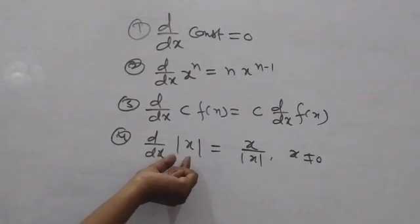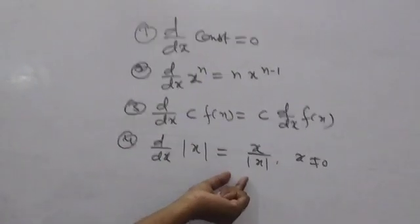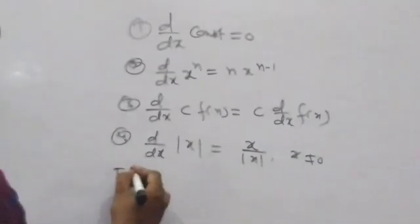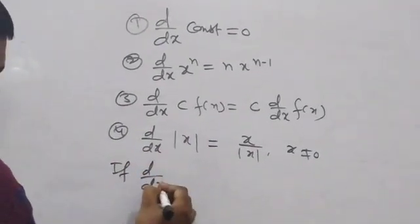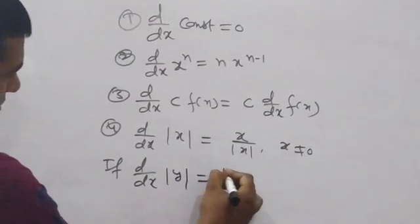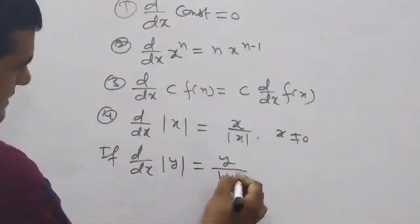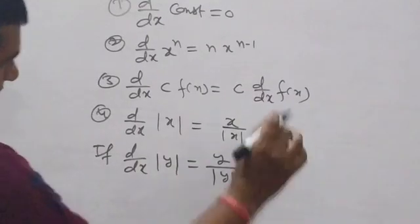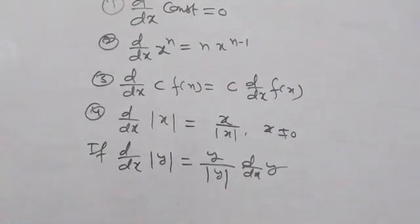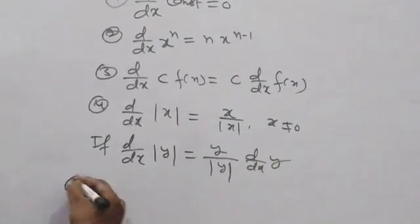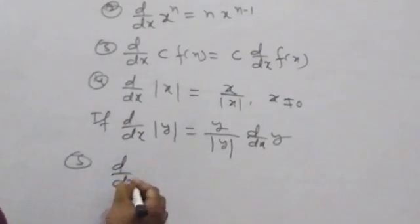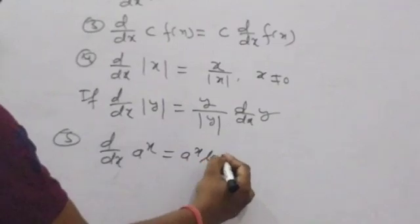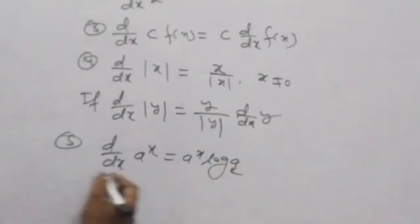That means if under the modulus there is any function, then it equals that function upon the modulus of that function. For example, d/dx of |y| is equal to y upon |y| times d/dx of y. Next formula — formula 5: d/dx of a^x is equal to a^x times log a (base e).